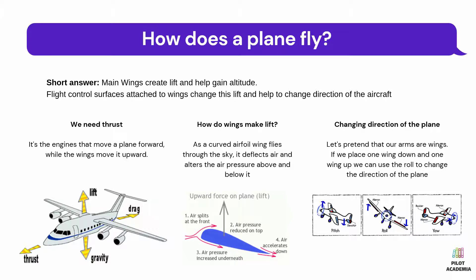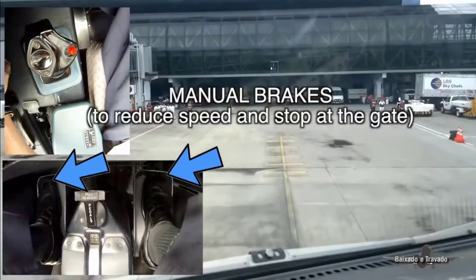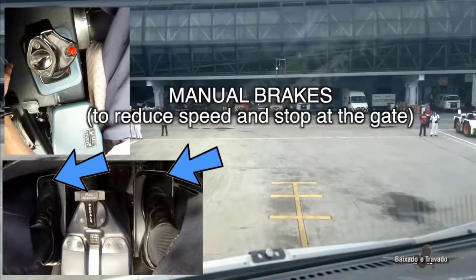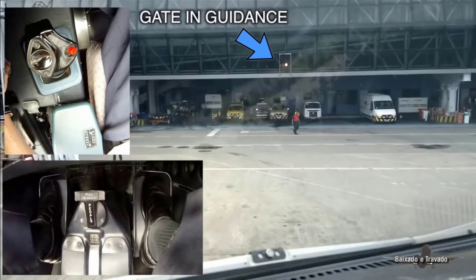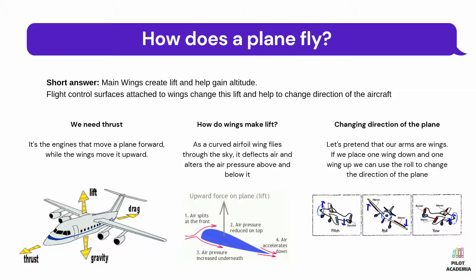The pilot pushes the top of the rudder pedals to use the brakes. The brakes are used when the plane is on the ground to slow down and stop. The top of the left rudder pedal controls the left brake and the top of the right pedal controls the right brake. Looking at all these motions together, you can see that each type of motion helps control the direction and level of the plane when it is flying.